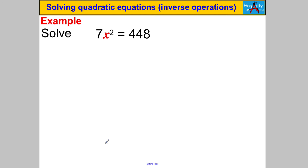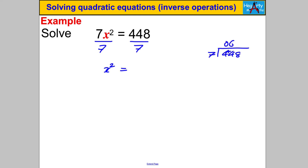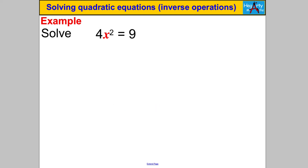Next: 7x² = 448. Pause and have a go. I'll undo the multiply by 7 by dividing both sides by 7. Doing 448 ÷ 7 by short division: 7 into 44 goes 6 remainder 2, 7 into 28 goes 4 — so X² = 64. Taking square roots: X = ±8.